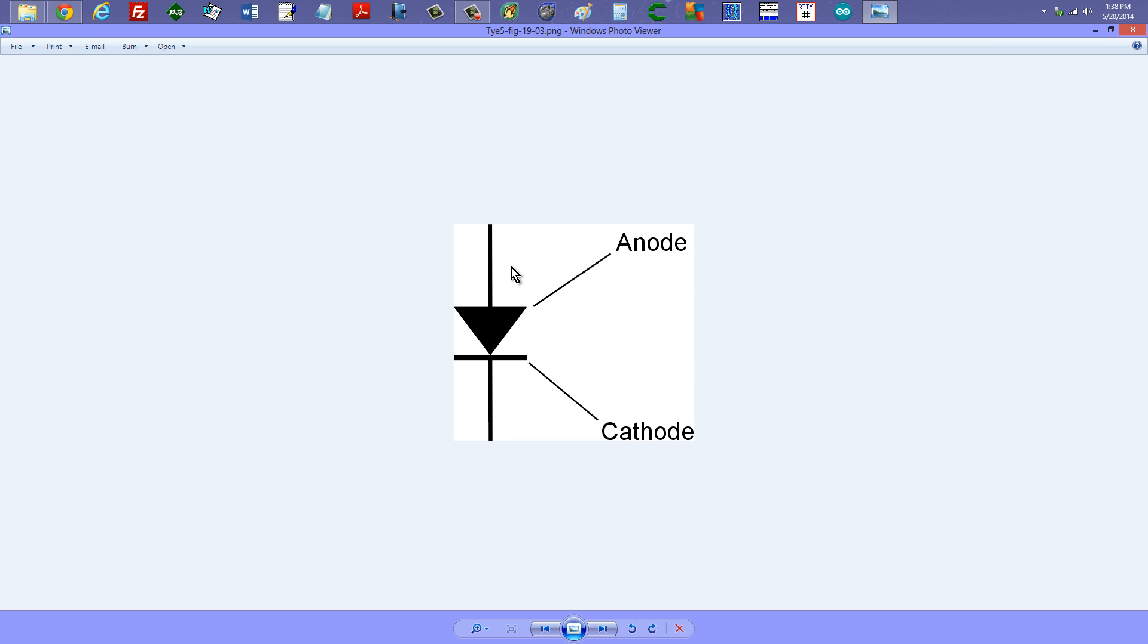When you're looking at the symbol for a semiconductor diode, you'll see something like this. An anode, which is like an arrow, pointing at the cathode, which is like a straight line. And the cathode generally is made of a material that contains far more electrons than holes, whereas the anode is made of a material that contains more holes than electrons.